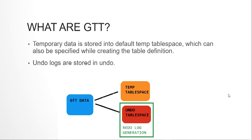Why do we use GTTs? Basically, GTTs give some performance improvement. The data in the GTT is stored in the temporary tablespace — whichever default temporary tablespace Oracle is currently using, the GTT's data will be stored there. A temporary tablespace is not protected by redo log generation, so we decrease the amount of logs generated and hence increase performance.